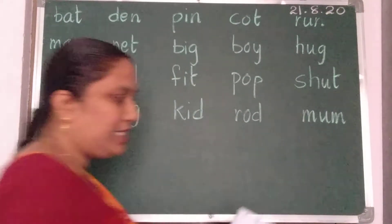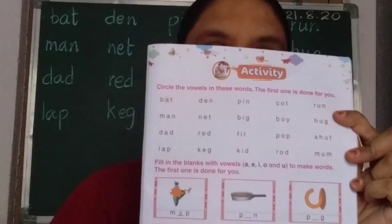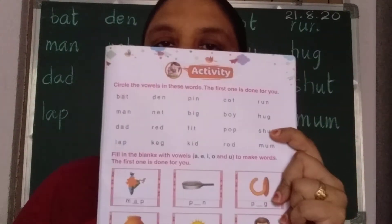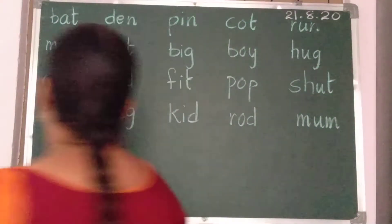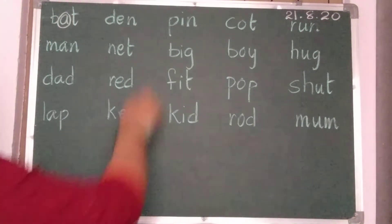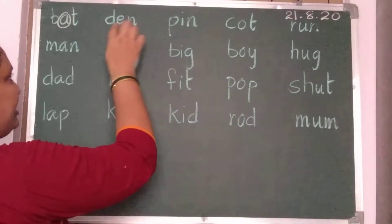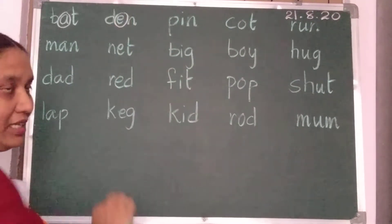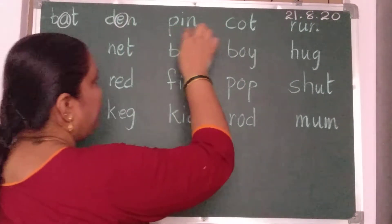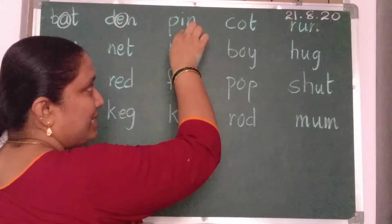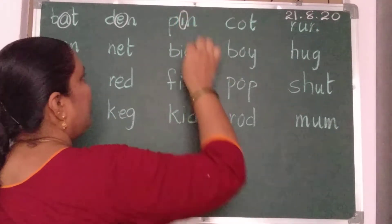See children, here they gave few words. You should circle only the vowels. The first one is done for you already. The next word is den — D, E, N. So E is a vowel, you should circle E. P, I, pin. So I is a vowel — you should circle I.